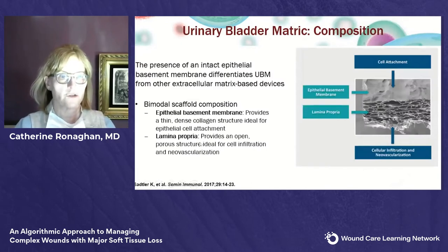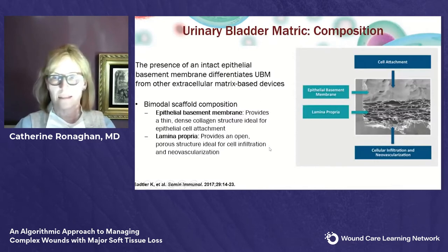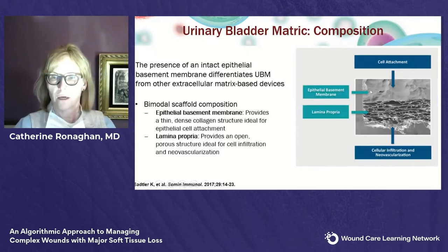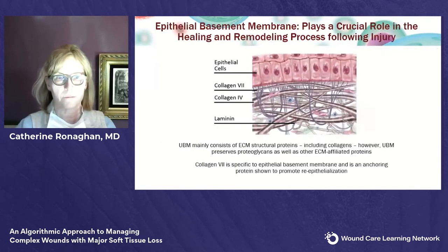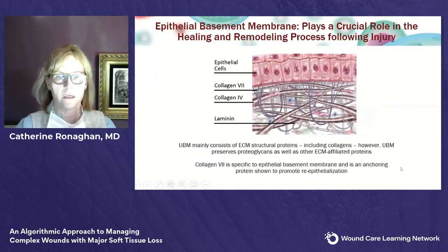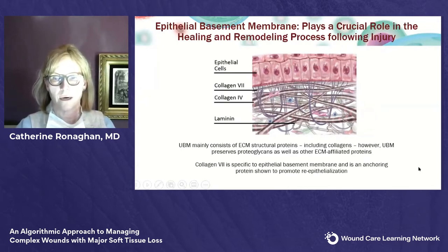It's an interesting bimodal scaffold design. It has the epithelial basement membrane — a dense collagen structure ideal for epithelial cell attachment — and the lamina propria, a very open porous layer ideal for cell infiltration and neovascularization. All of the collagens and cell signaling proteins are preserved in this material. In particular, there's collagen 7, which is an important anchoring protein to promote re-epithelialization.